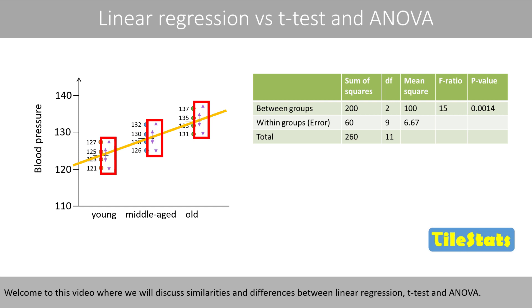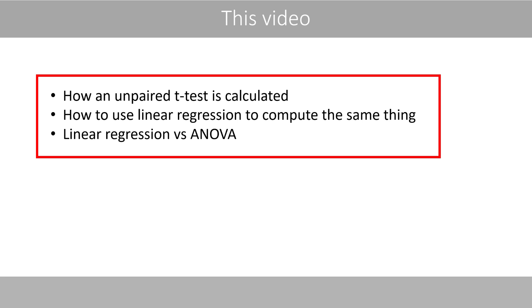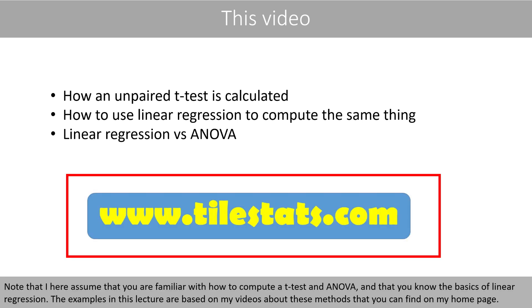Welcome to this video where we'll discuss similarities and differences between linear regression, t-test, and ANOVA. We'll first see how an unpaired t-test is calculated, and then see how to use linear regression to compute the same thing. At the end of this video we'll compare linear regression and ANOVA. Note that we assume you are familiar with how to compute the t-test and ANOVA, and that you know the basics of linear regression. The examples in this lecture are based on my videos about these methods that you can find on my homepage.